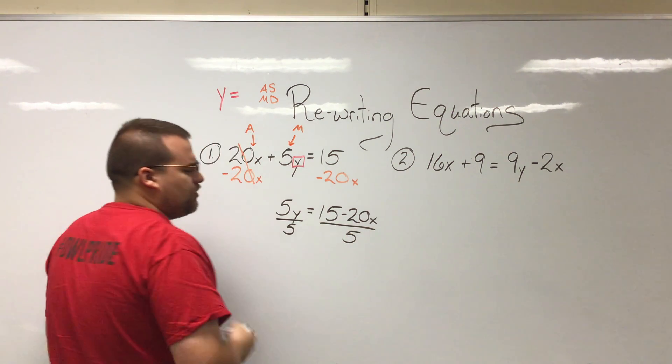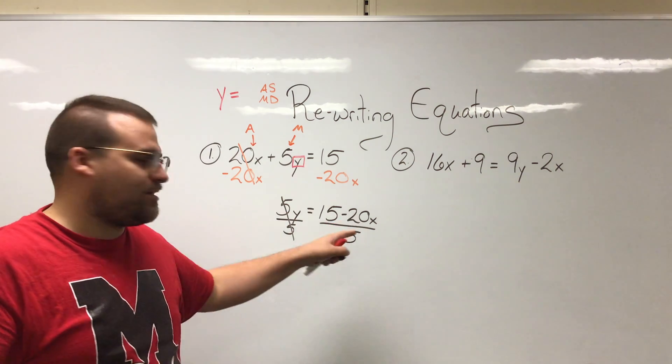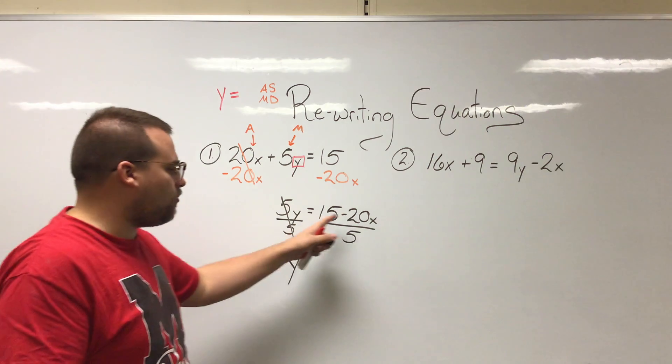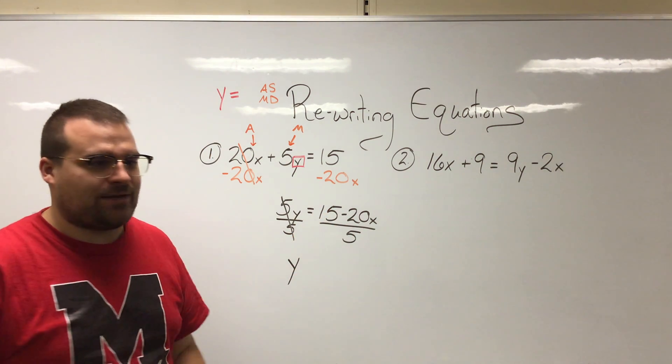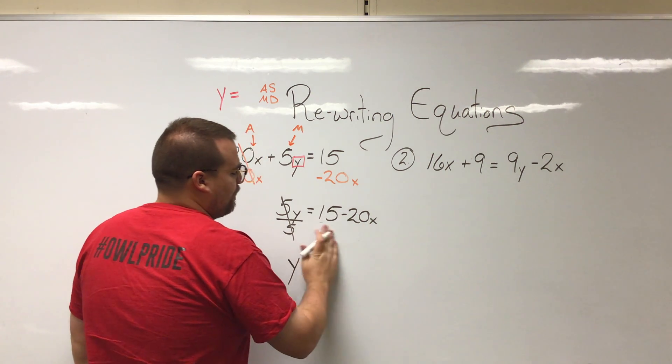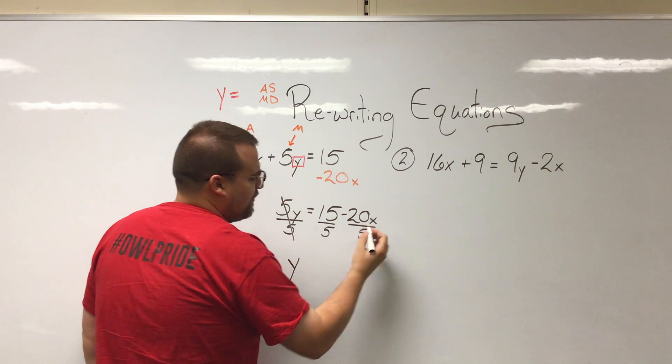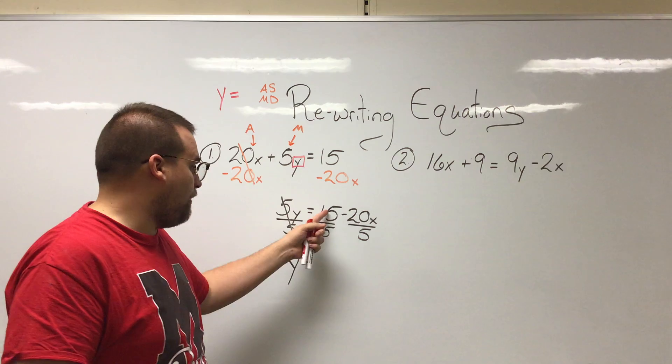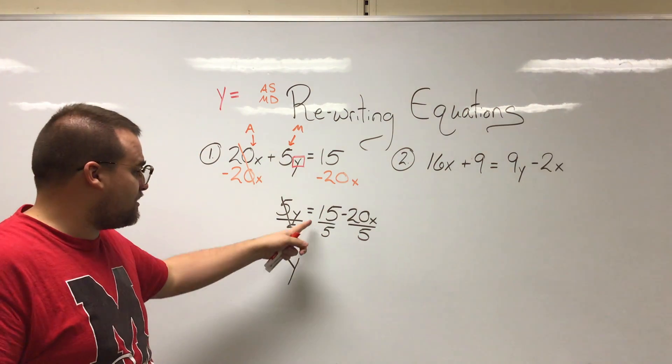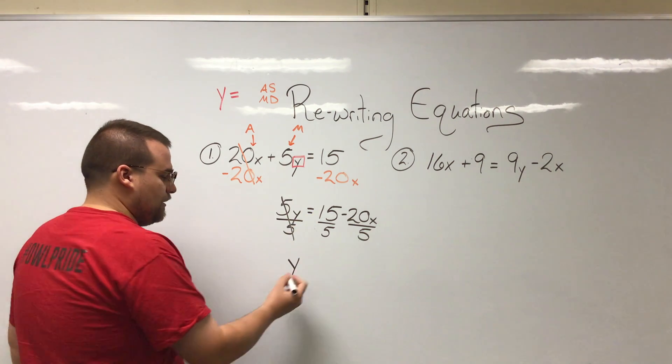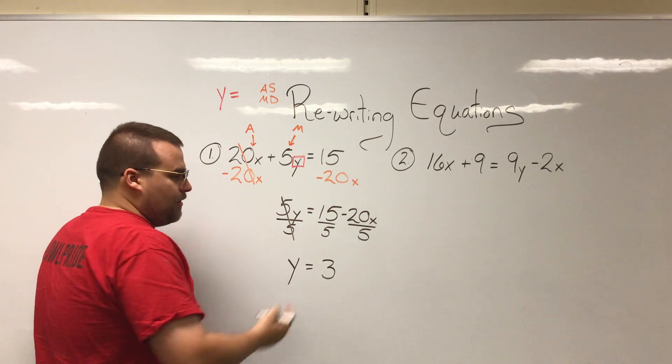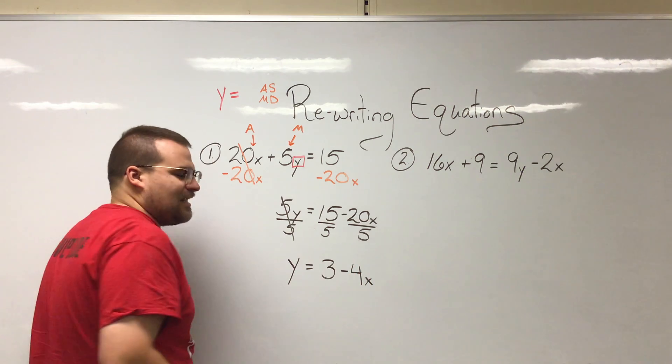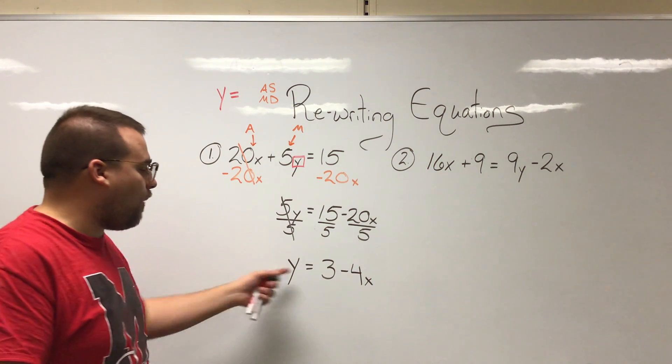Now I know we've talked about how you divide by 5, and it divides everything by that number. I want to be a little bit more specific about that. Technically what happens is we can write it where it divides everything, but another way of writing it is actually like this where it divides each individual number. Now it can be important to write it in this way whenever those numbers can be divided. Not always the case, but in this one can 15 be divided by 5? Absolutely. 15 divided by 5 is 3. Can negative 20 be divided by 5? Also it can. That's negative 4, and negative 4x specifically because that x doesn't change. So now we finish our problem, we have y equals 3 minus 4x.